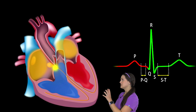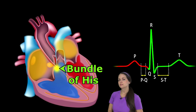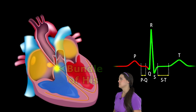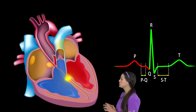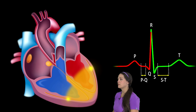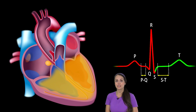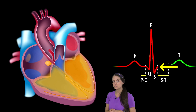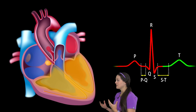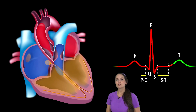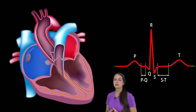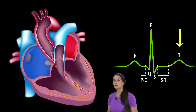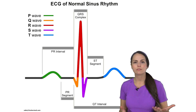Once signals leave the AV node, they go down to the bundle of His, which is like our third pacemaker, causing the heart to beat at about 20 to 40 beats per minute. Then electrical signals go down through the bundle branches — right and left — and to the Purkinje fibers. Then we get ventricular depolarization, so we get contraction of those ventricles. Whenever the ventricles contract, they create the QRS complex representing ventricular depolarization. After that, since they've contracted, they now have to rest, so we have ventricular repolarization. The ventricles are so big that when they relax, they create the T wave. Then this process repeats itself over and over again.